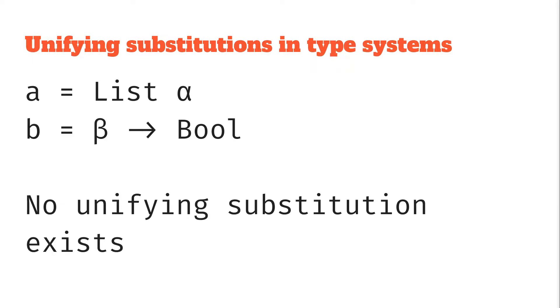Let's have a look at another example. In this case we have a is List α, and b is β → Bool, and we want to find a unifying substitution. Well here, because they're using different type functions—a's top level type function is a list and b's top level type function is a function—these aren't actually going to unify because there's no way a list is the same thing as a function, and so there is no unifying substitution for these types.